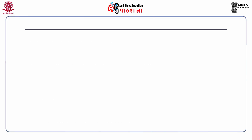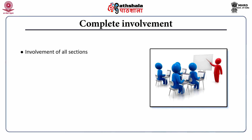The next essential of performance management system is complete involvement. In order to get desired results from a performance management system, involvement of each and every section of the organization is required. Goal setting is an important aspect of performance management. As goal setting is done jointly, it demands participation of all the people in the organization to achieve common goals. A wholehearted involvement increases the commitment level of employees and facilitates smooth and effective communication between managers and employees.